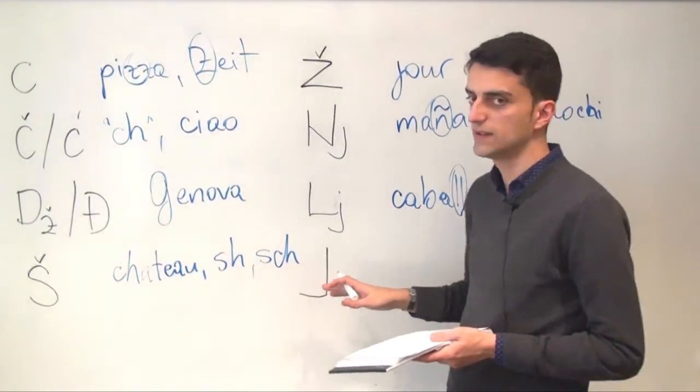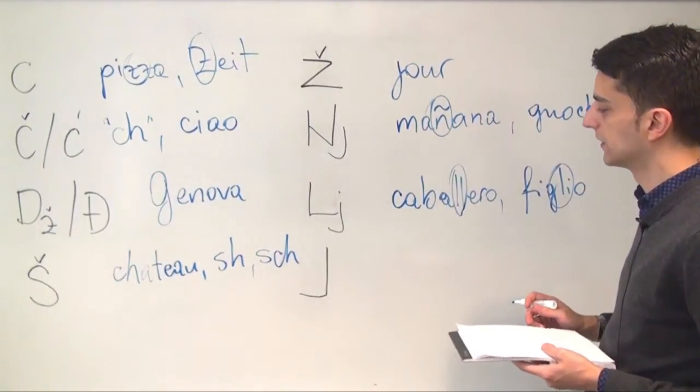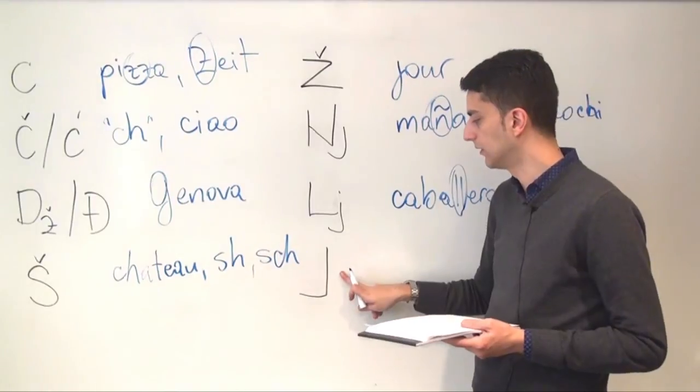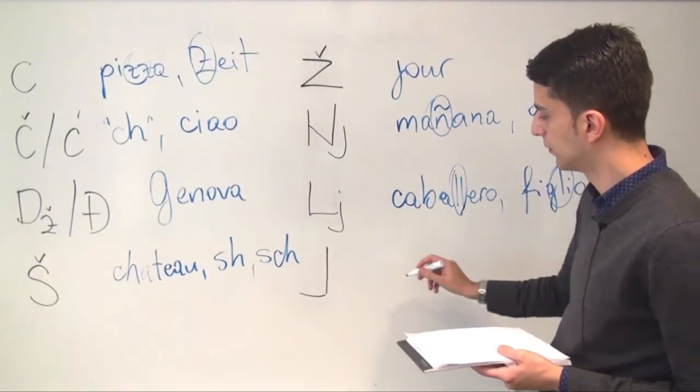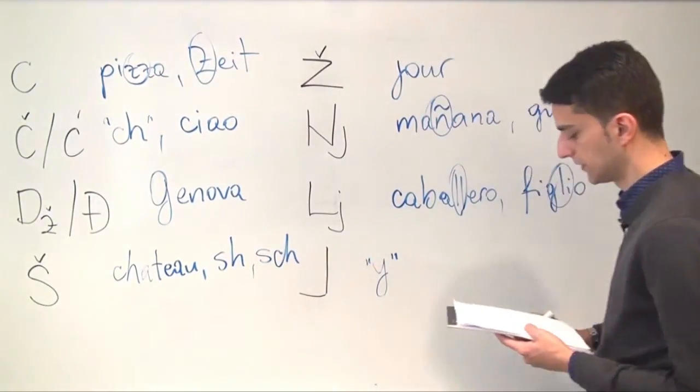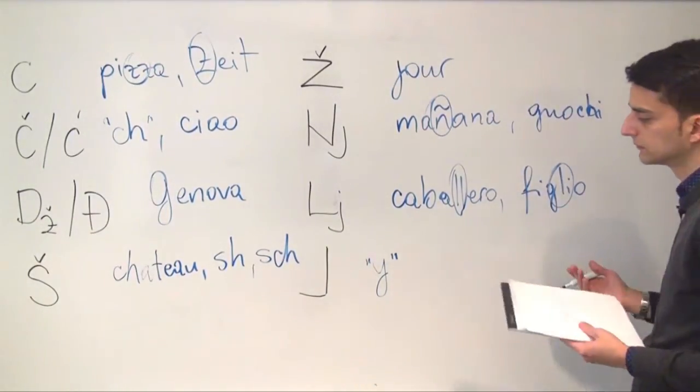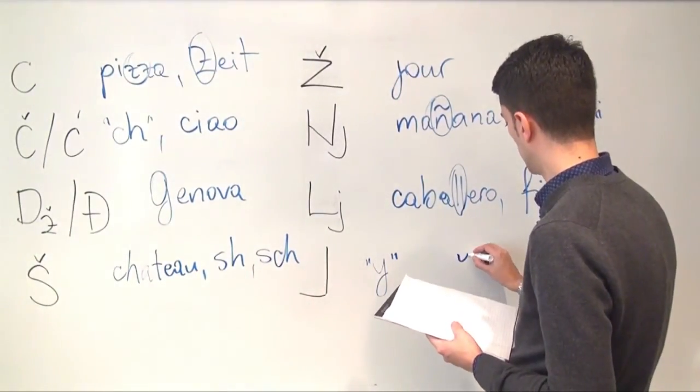And then we come to the easiest of all these letters to pronounce, which is the letter J. In English it's the letter J, but it sounds more like the letter Y in words such as boy, for example. And in Spanish you can hear in the word yo.